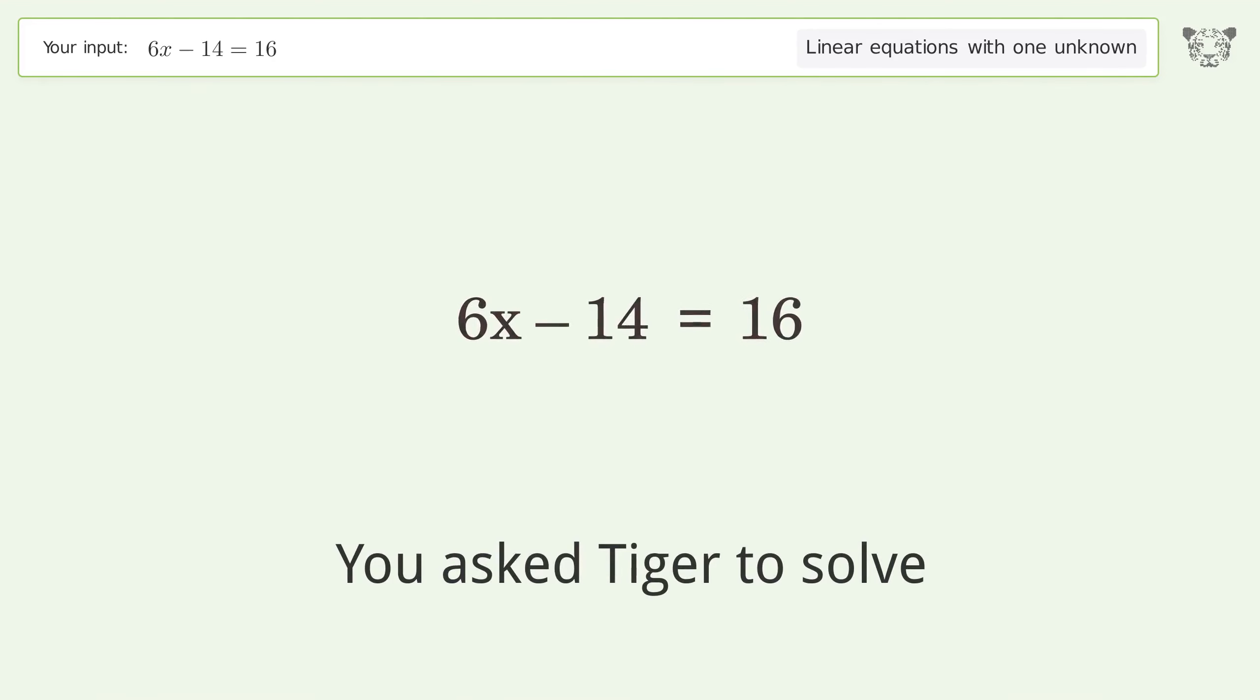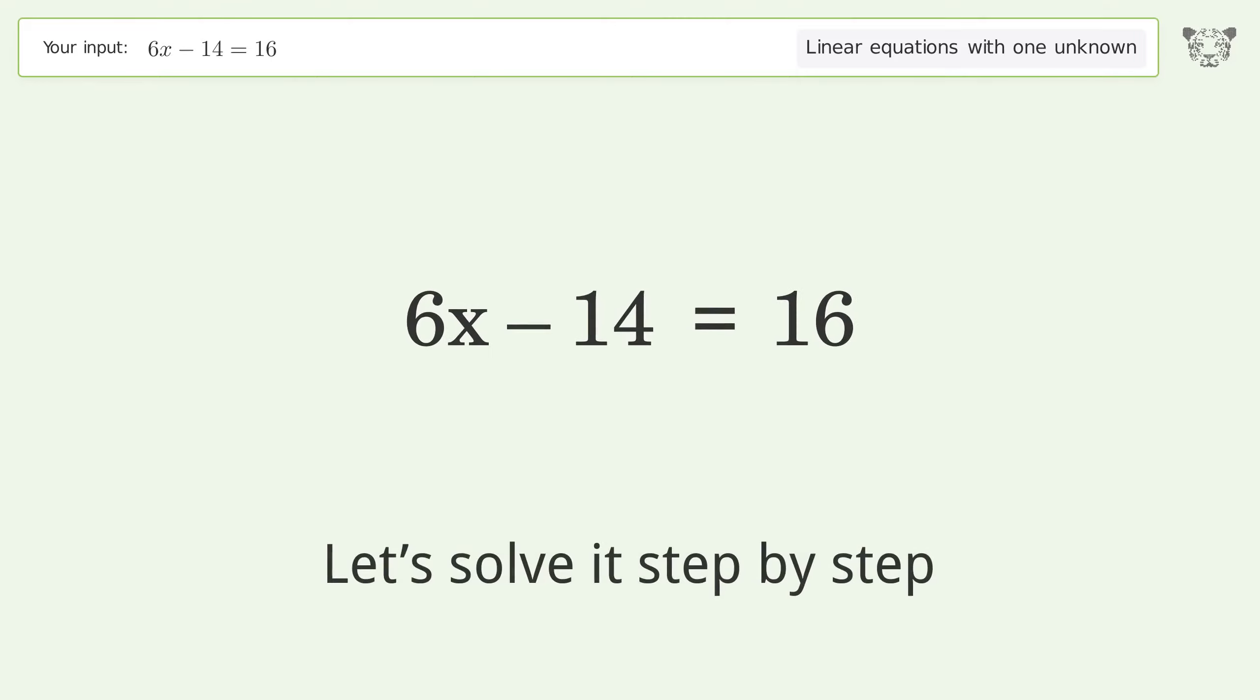You asked Tiger to solve. This deals with linear equations with one unknown. The final result is x equals 5. Let's solve it step by step.